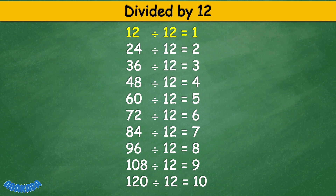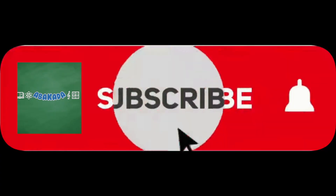Divided by 12: 12 divided by 12 equals 1, 24 divided by 12 equals 2, 36 divided by 12 equals 3, 48 divided by 12 equals 4, 60 divided by 12 equals 5, 72 divided by 12 equals 6, 84 divided by 12 equals 7, 96 divided by 12 equals 8, 108 divided by 12 equals 9, 120 divided by 12 equals 10. Thank you for watching.